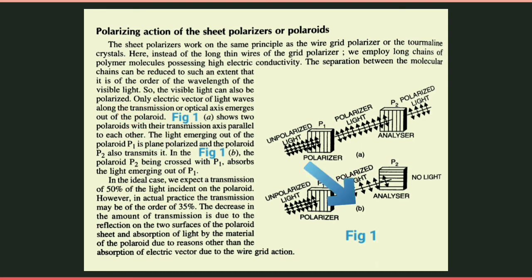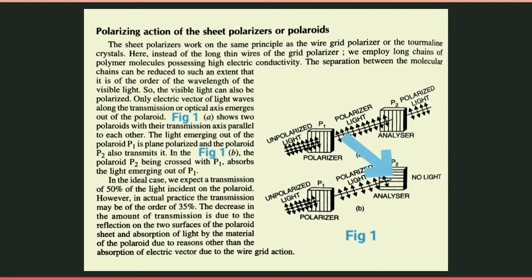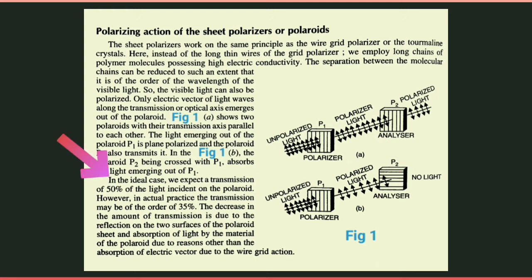In Figure 1b, the polarite P2 being crossed with P1 absorbs the light emerging out of P1. Agar hum Figure 1b ko dekhen to jo polarite P2 hai wo P1 se crossed hai — yani ke un dono ka jo optical axis hai wo parallel nahi hai — to is case mein P2 polarite absorb karega light ko jo P1 se aayi hai. In the ideal case we expect a transmission of 50% of light incident on the polarite.